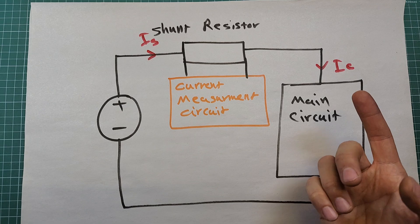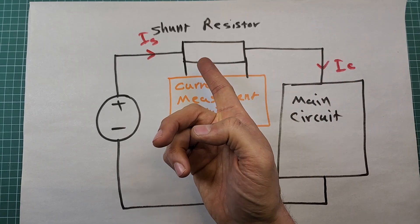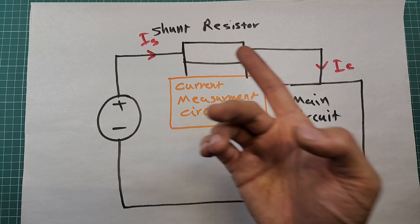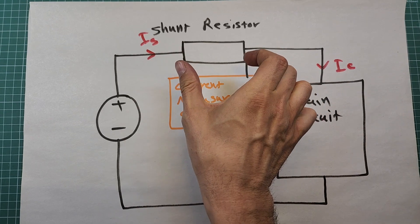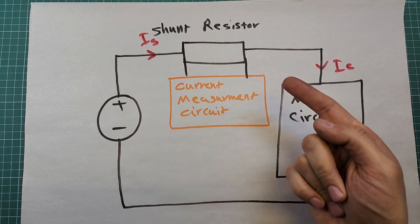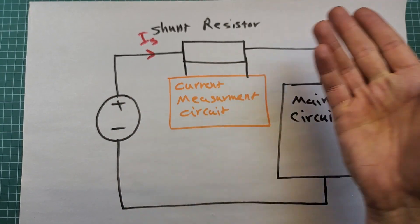In many cases using a shunt resistor is the best method, but it also has disadvantages that make us not want to use it in some cases. One main disadvantage is that a resistor is added to the path — no matter how small it is, it may negatively affect the performance of the main circuit. For example, if a large current passes through the shunt resistor, it causes the voltage across it to increase, and this voltage drop is subtracted from the voltage of the main circuit.